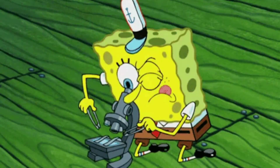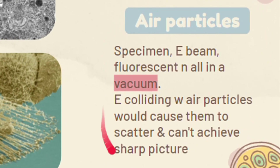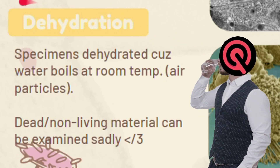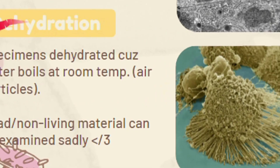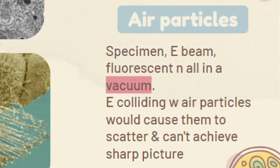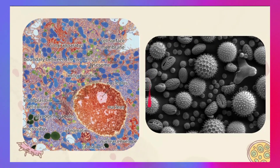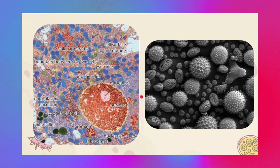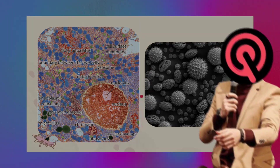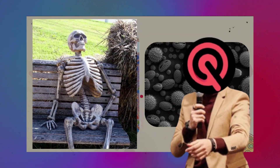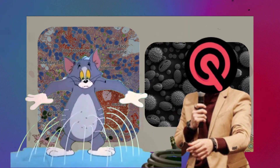Everything — the specimen, electron beam, and even the fluorescent screen — is kept in a vacuum. This is because even air particles can interfere and collide with the electrons, causing them to scatter. Lastly, the specimens viewed actually need to be dehydrated, because when the water in them evaporates, the air particle problem arises again. So although efforts are made to preserve specimens in a lifelike state, only dead and non-living specimens can be examined due to this dehydration.